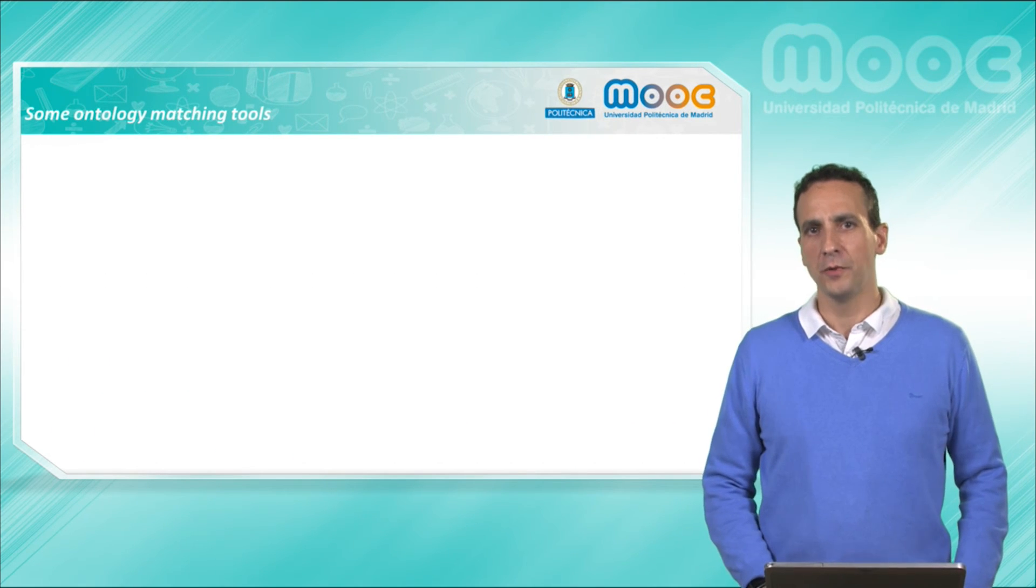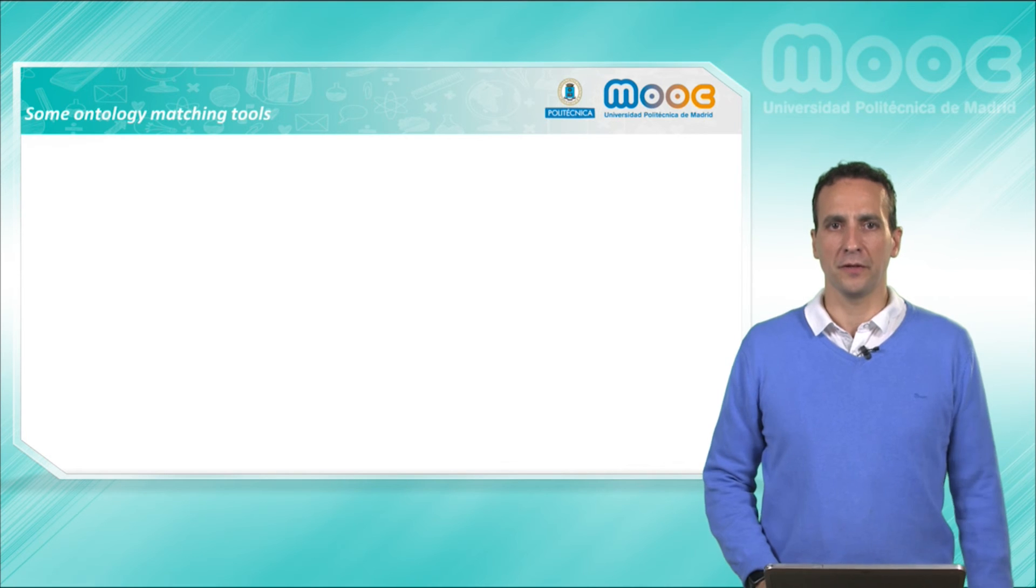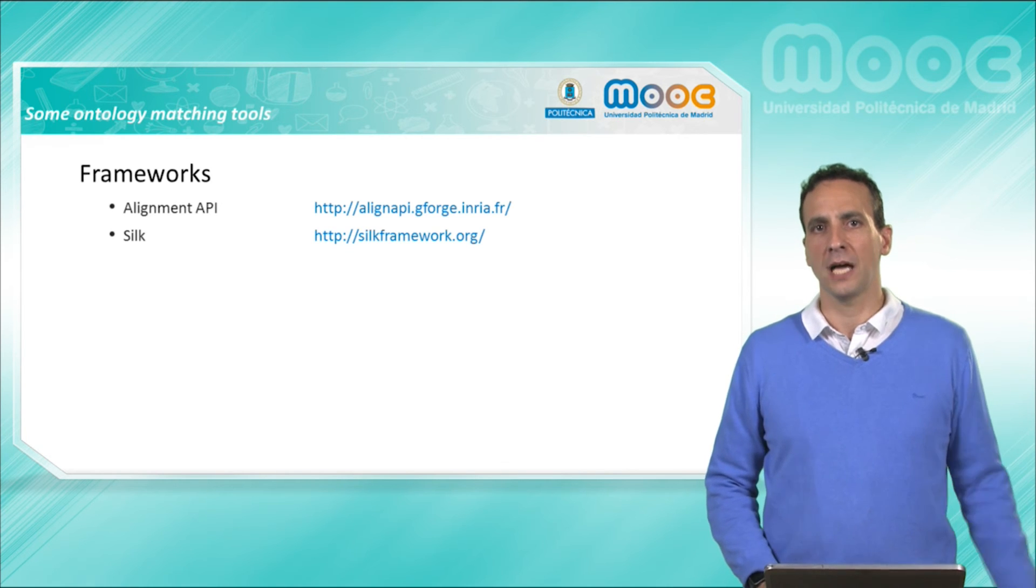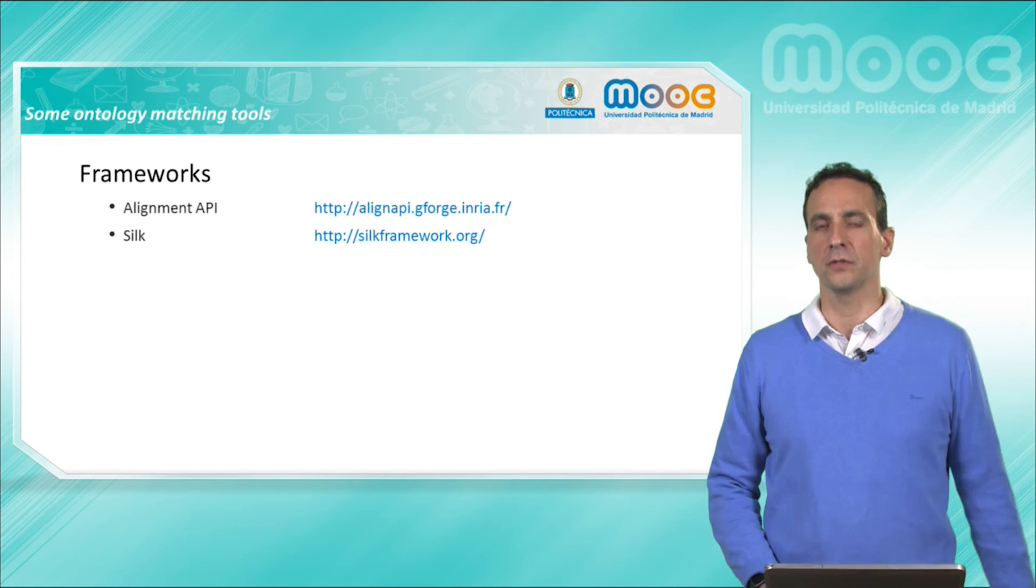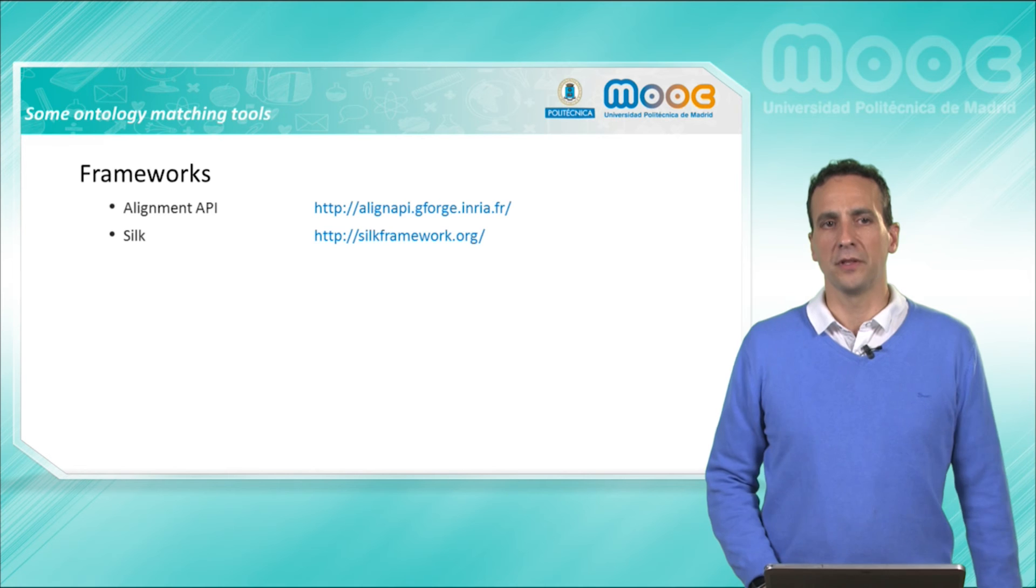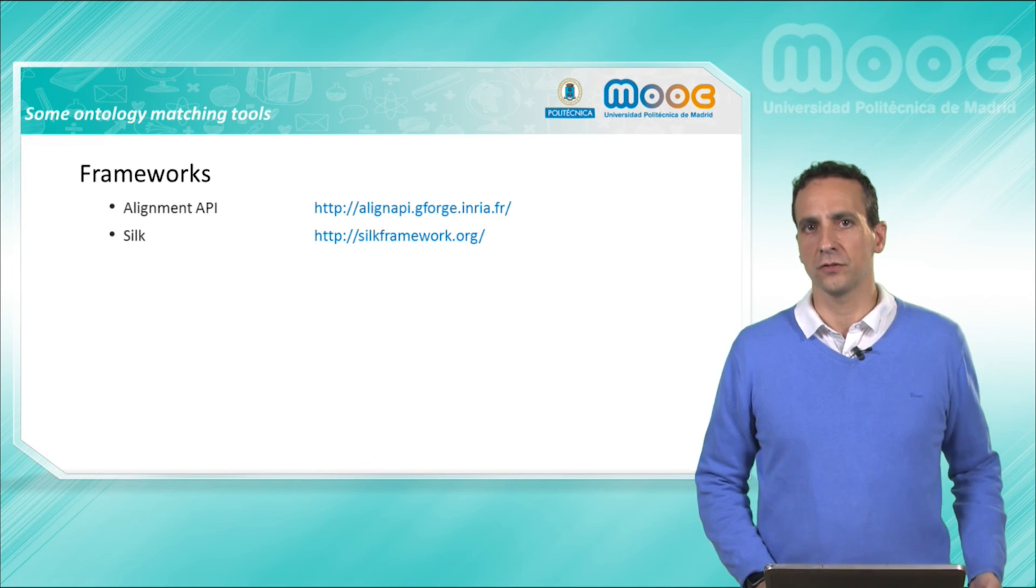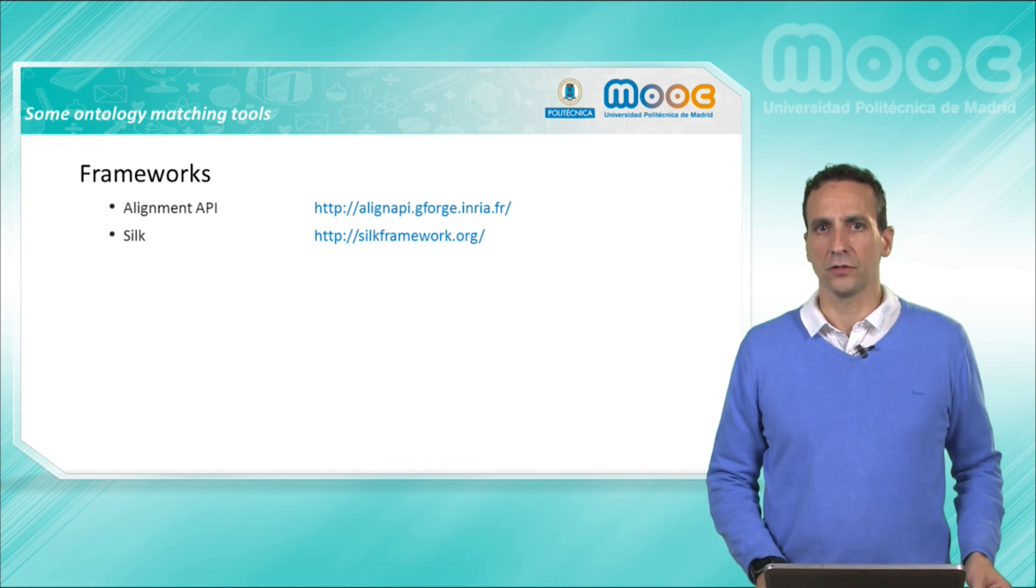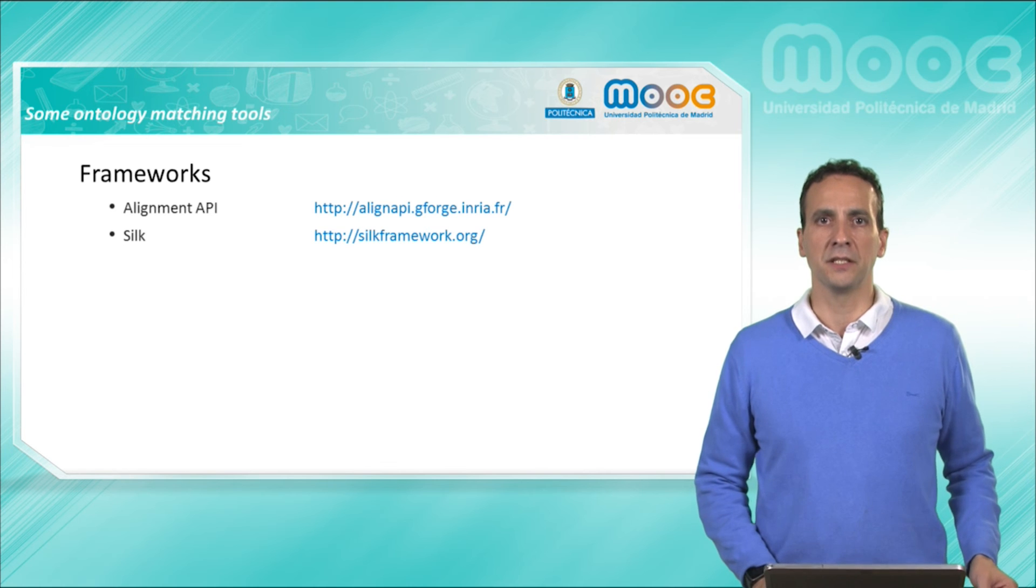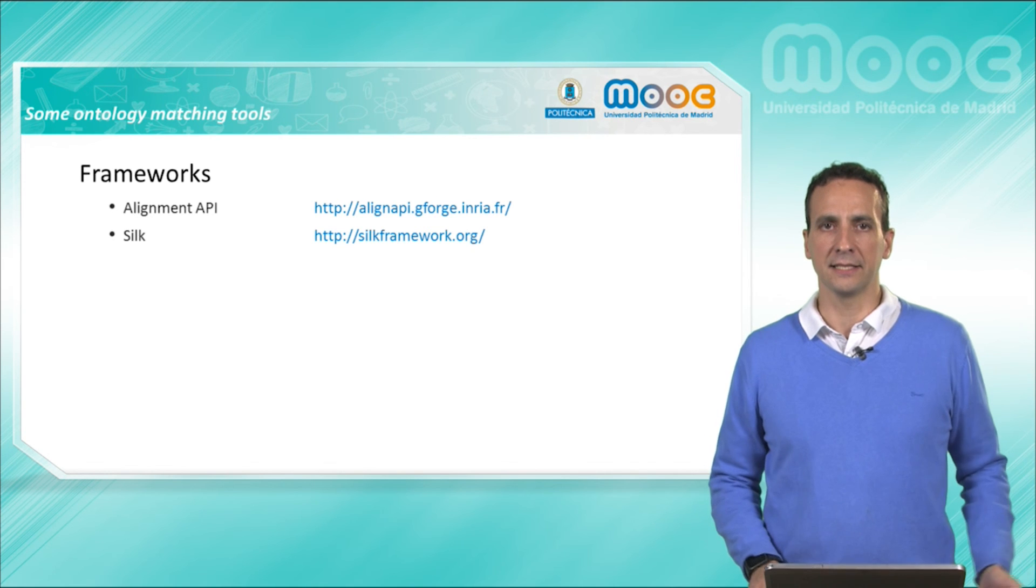We have quickly reviewed some of the elementary techniques that can be used to build an ontology matching system. Let's finish this lesson with just a quick overview on some of the existing tools and frameworks that can be used out of the box to make ontology alignment. Let's start with these two important frameworks: the Alignment API, which is a collection of classes and methods in Java to manipulate alignments, and also SILK, which is intended for alignment of instances of classes or more at the data level.